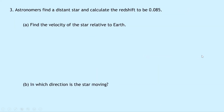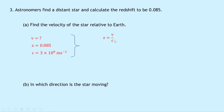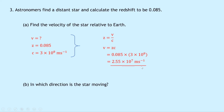Question 3 says that astronomers find a distant star and calculate the redshift to be 0.085. Part A says to find the velocity of the star relative to the Earth. We know z is 0.085 and c is 3×10⁸ meters per second. Using z equals v over c and rearranging: v equals z times c. Substituting in: 0.085 times 3×10⁸ gives 2.55×10⁷ meters per second.